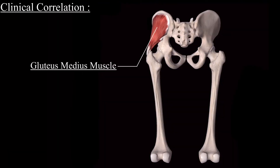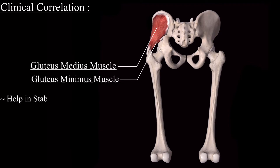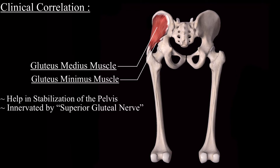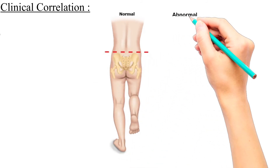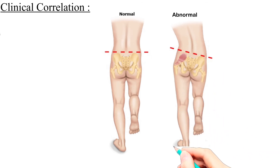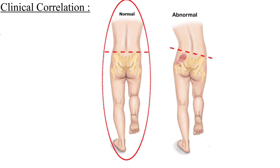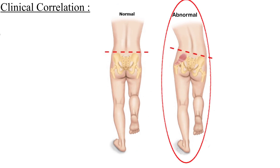The gluteus medius muscle, together with the gluteus minimus muscle, helps in the stabilization of the pelvis. Both of these muscles are innervated by the superior gluteal nerve. When the superior gluteal nerve becomes damaged, the patient presents with a positive Trendelenburg sign. In this sign, the patient is asked to stand on one limb, and when the patient stands on the affected limb, the pelvis severely drops over the other limb — so instead of standing straight, the patient becomes curved due to pelvic drop.